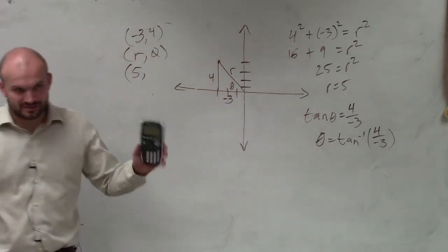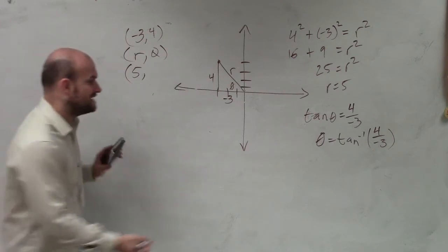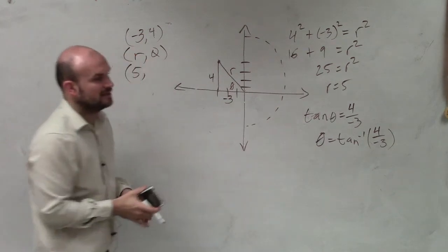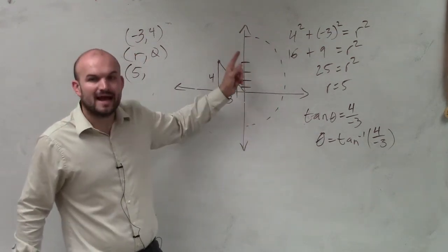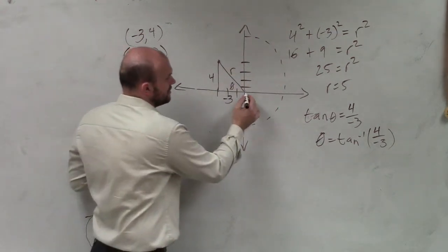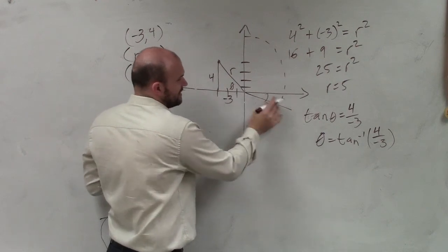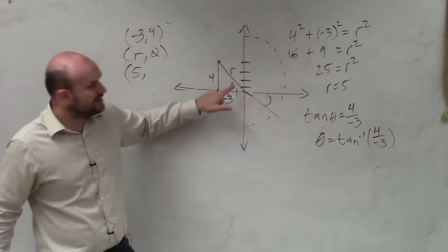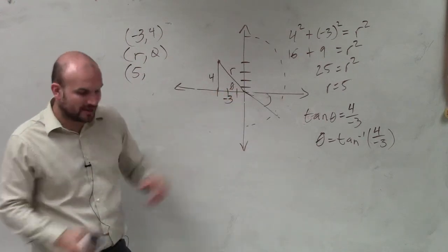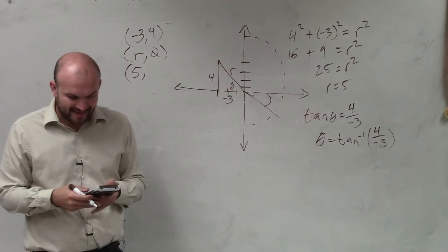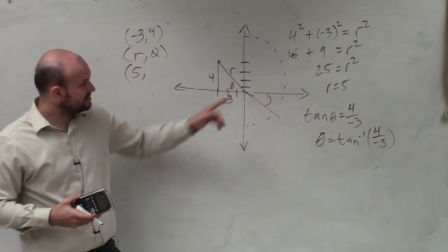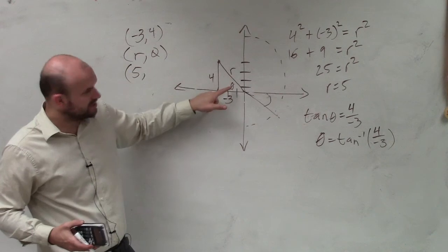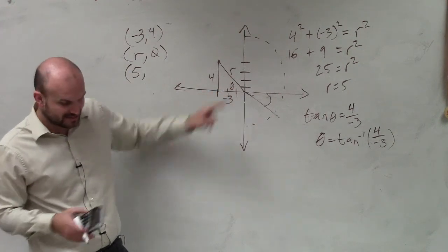Just remember, when we take the inverse of tangent, the inverse of tangent had to be within negative pi halves and pi halves. So my angle is giving this value down here. So I need to figure out this theta. So what I'm going to do is I'm just simply going to add that to pi. Since it's in my negative angle, I'm going to add it to pi, which will give me this theta, which is going to be the same as the reference angle of this theta.